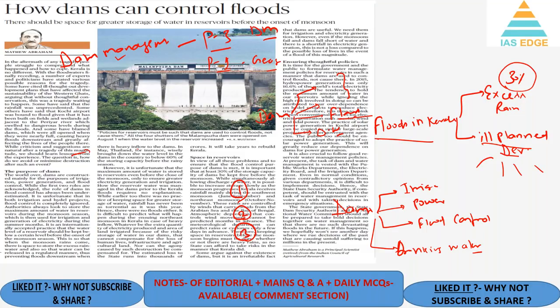Dams should be managed by a scientific decision support system. First, authorities always look to store the maximum amount of water in reservoirs during the monsoon season, which is then used for irrigation and electricity generation in summer months. It is important that at least 30% of storage capacity of dams should be kept free before the monsoon. Kerala receives maximum rainfall through the southwest monsoon in June–September and also some rainfall from the northeast monsoon in October–November.